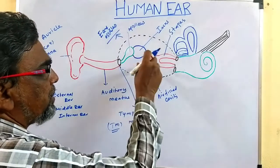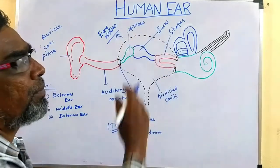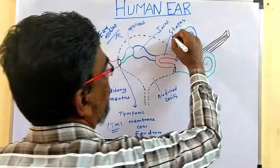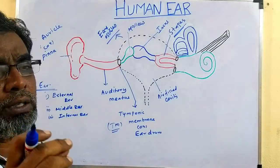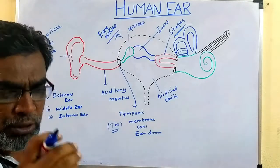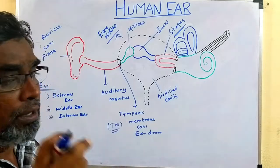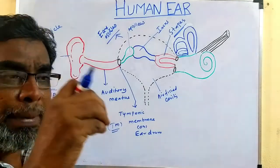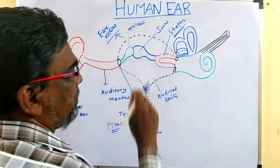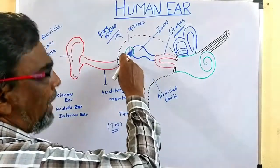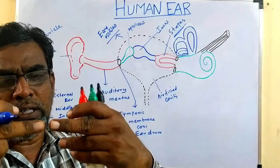These three bones are present in the middle ear, in the tympanic cavity. Stapes is the smallest bone of the body. We know that the longest bone is the femur, but the smallest bone is the stapes, which is present in the middle ear. The three bones are attached close to each other with no gap — stapes attached to incus, incus attached to malleus.